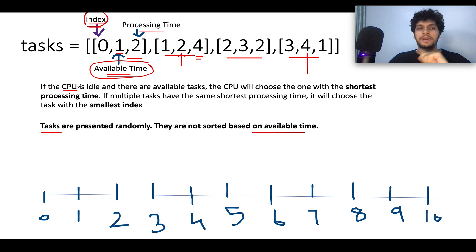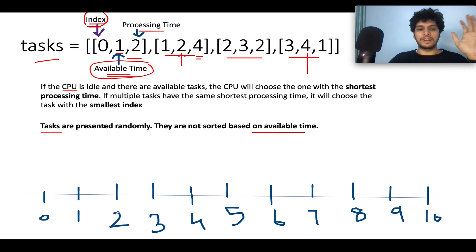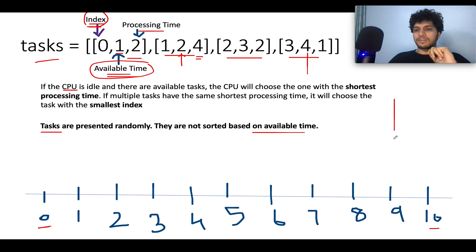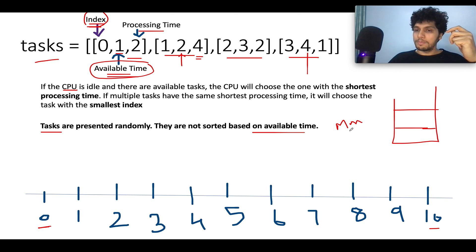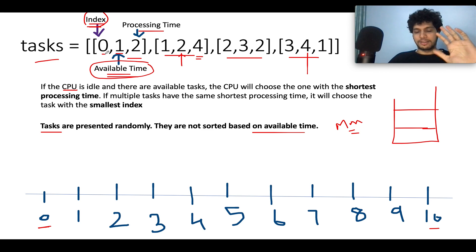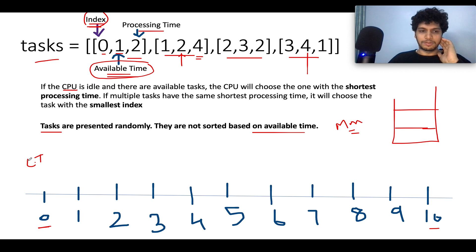Now let's devise the algorithm for how the CPU picks tasks. We hypothetically assume a timeline from time zero to time ten. We will also maintain a min heap of available tasks seen so far. When pulling from the min heap, the task with the least processing time is extracted first; in case of a tie, the one with the lower index is pulled first.